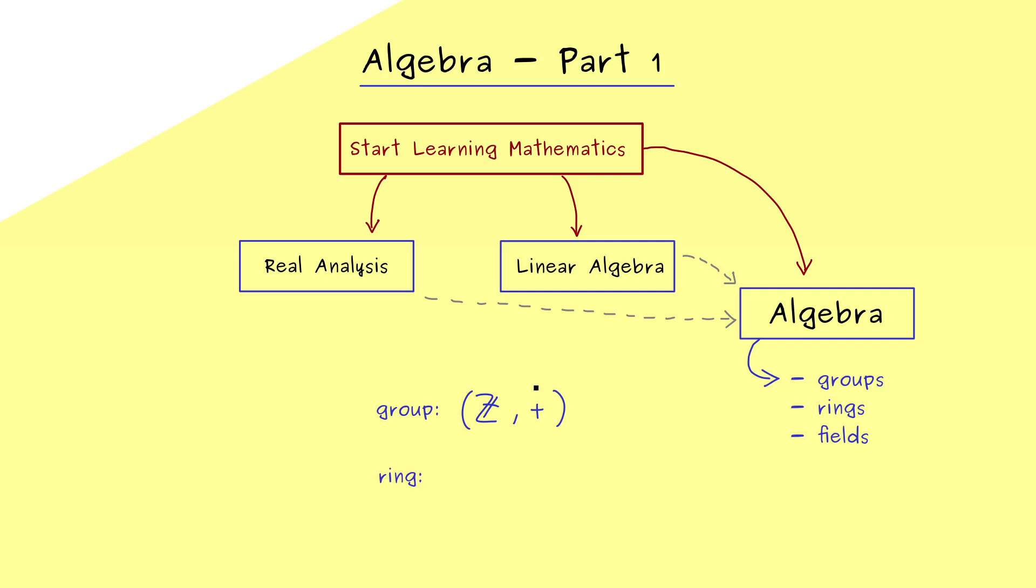Now on the other hand the integers are also a good example for a so called ring. There the integers need more structure, namely besides the addition we also need the multiplication. Hence a ring is just a set together with two operations, where for the one operation we don't need all the inverses in the set. In fact by having more inverses we reach the concept of a field.